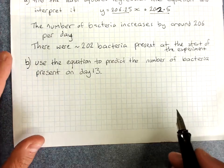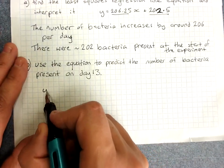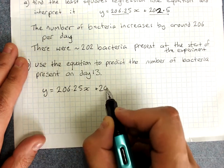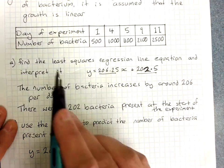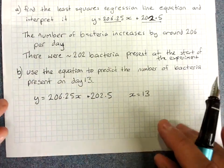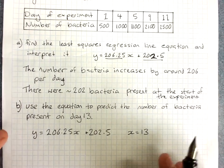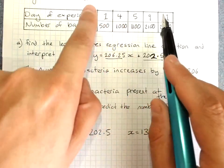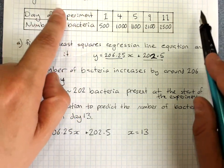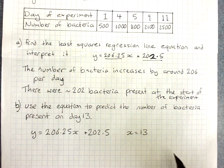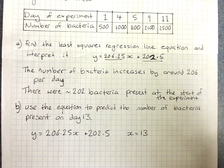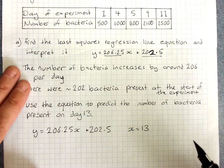So anyway, use the equation to predict the number of bacteria present on day 13. So my equation is y equals 206.25x plus 202.5, and we want day 13. Now our days are the x variable, so x equals 13. Remember, we have to deal with the concept of interpolation, making predictions inside where the data is that I have, or extrapolation, making predictions outside where the data is that I have. So this is extrapolation. I'm outside my data, but not by very far. The further outside your data you go, the further outside you're extrapolating, the less confident you can be about your results.